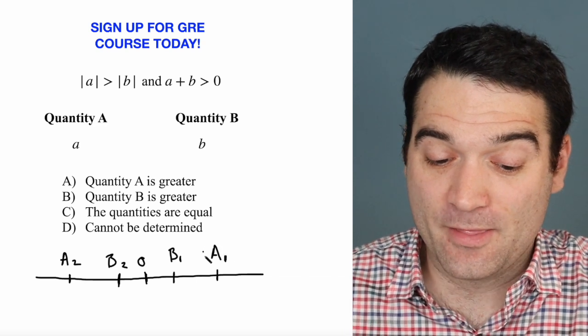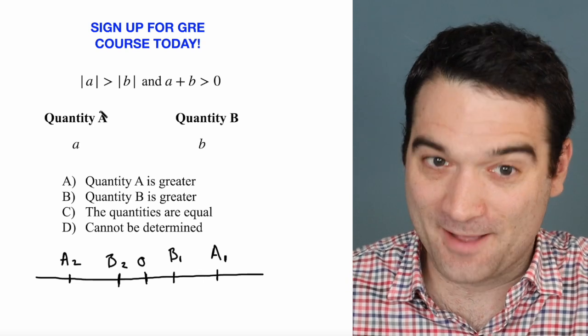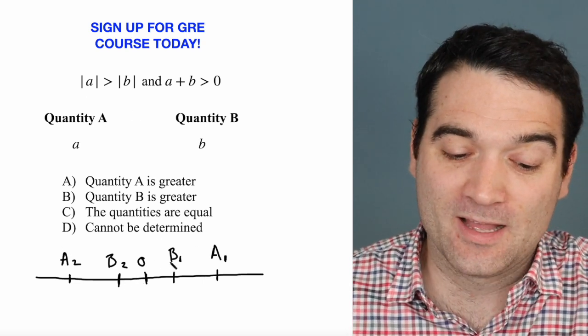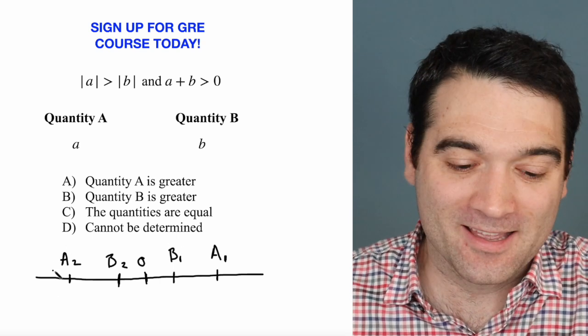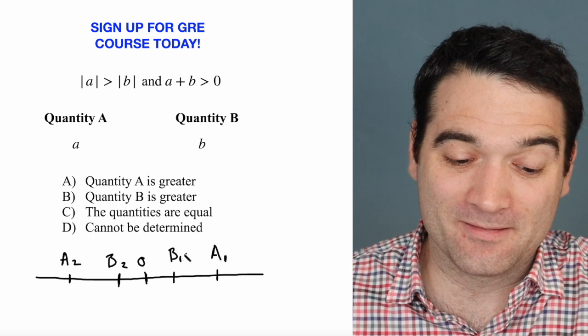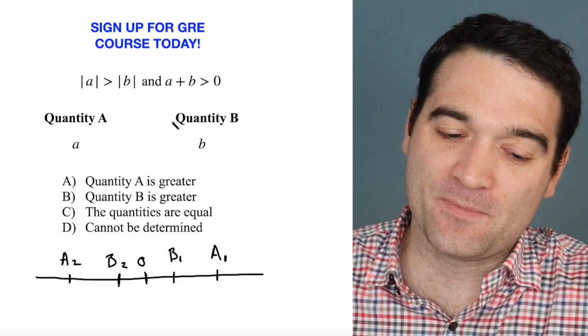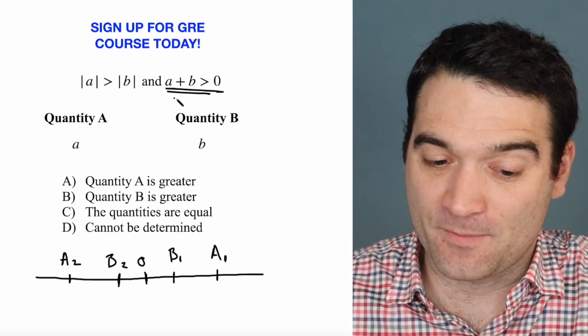And of course, we could have a combination. We could have this A, a very positive A, and a negative B, in which case absolute value of A is still greater than the absolute value of B. Or we could have the case where we have a very small B and a very negative A, and that would, again, create absolute value of A is greater than absolute value of B.